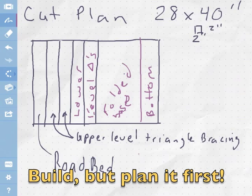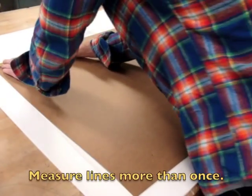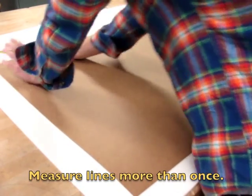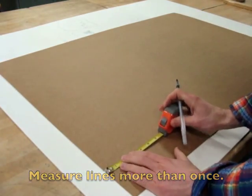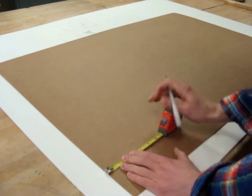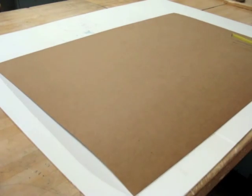When you have your design finished it's time to build but you can't build without a plan. So plan out your cuts, draw them out nice and neat, and when you do draw it out make sure you measure your lines twice before you use your straight edge.